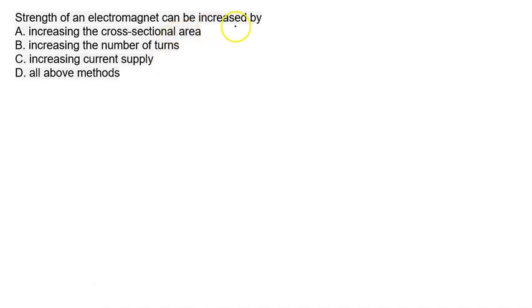Strength of the electromagnet can be increased by... We know if this is a solenoid, the iron nail inside the solenoid is known as the electromagnet. By increasing cross-sectional area, if you increase the cross-sectional area of the nail, definitely strength will increase, so option A is correct.